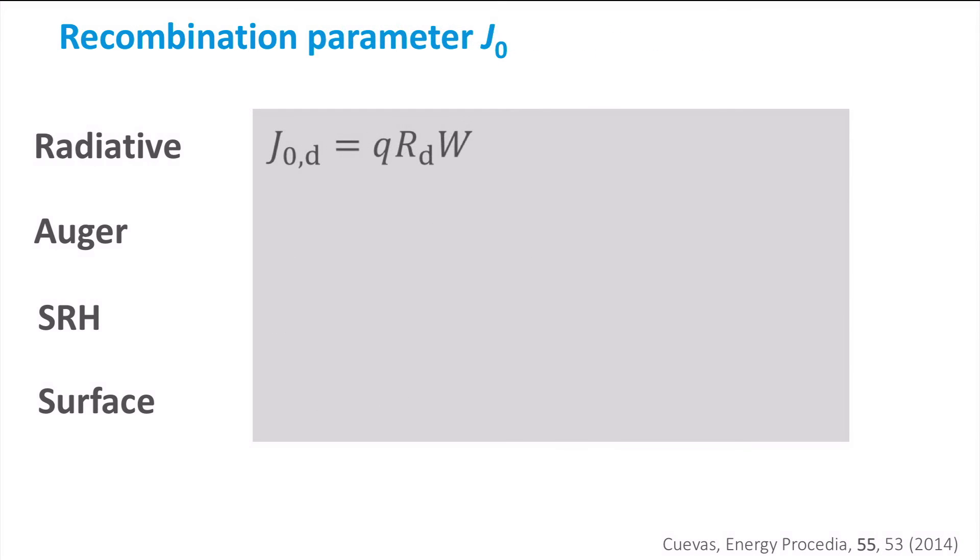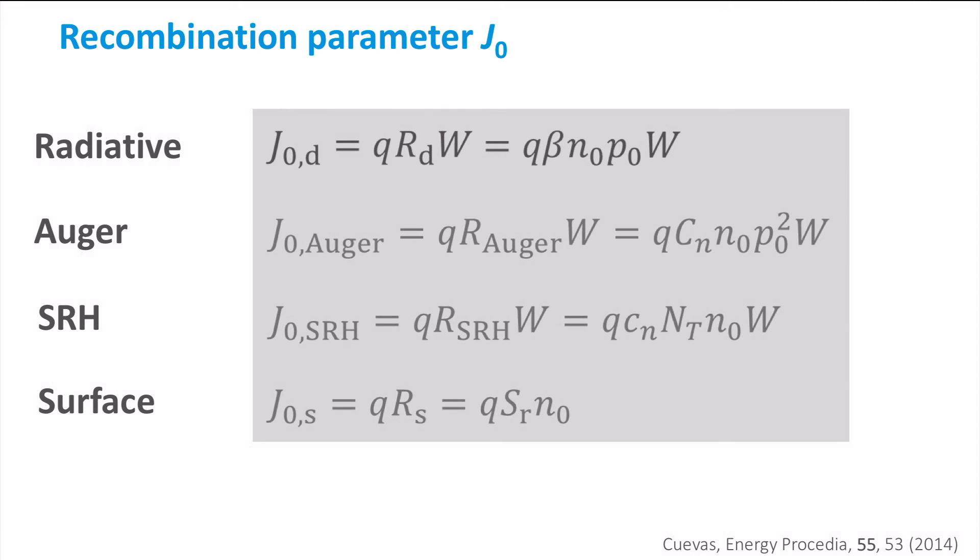In order to obtain J0, we multiply the recombination rate by the elementary charge and integrate it over the thickness of the semiconductor wafer to arrive at this expression. Applying this procedure in the same way for the other mechanisms, we find for each mechanism an associated J0.